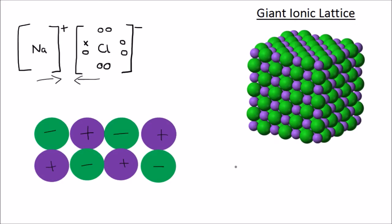The attractive forces between ions in the lattice are very strong and there are lots of them to overcome, so it takes a lot of energy to break the lattice apart and that means that ionic compounds have very high melting points and boiling points.